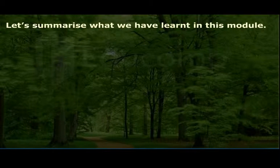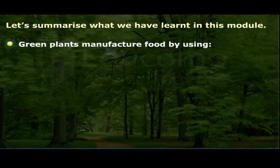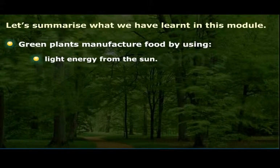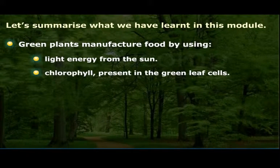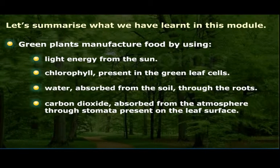Let us summarize what we have learned in this module. Green plants manufacture food by using light energy from the sun, chlorophyll present in the green leaf cells, water absorbed from the soil through the roots, and carbon dioxide absorbed from the atmosphere through stomata present on the leaf surface.